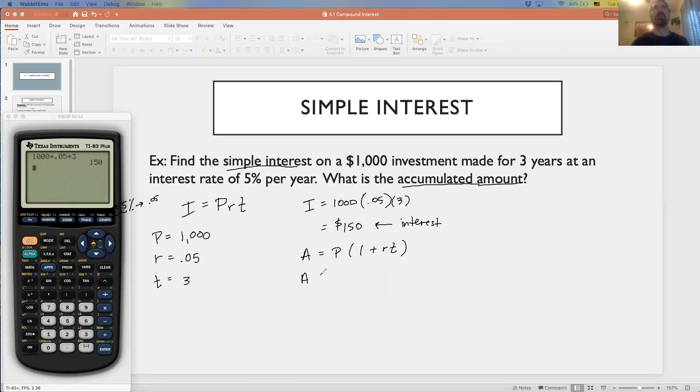Using this formula, we've got $1,000 for the principal, 0.05 for the R, and 3 for the time. In the calculator, I'm going to clear this out. We can type in $1,000, parentheses, 1 plus 0.05 times 3, close parentheses, and that gives that $1,150 that we were expecting to see there.